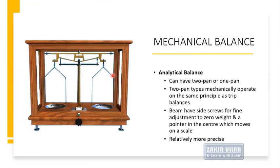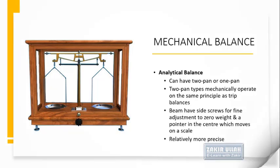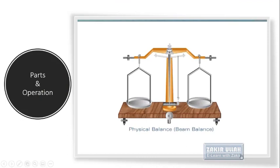Another type of mechanical balance is the analytical balance, which may have a single pan or a double pan. The double pan analytical balance is also called a physical balance and operates similarly to the trip balance. The beam has a screw for fine adjustment to zero weight and a pointer in the center which moves on a scale. This type of balance is relatively more precise compared to the trip balance or spring balance.